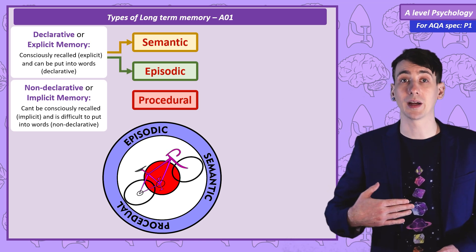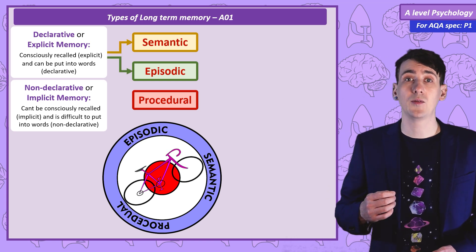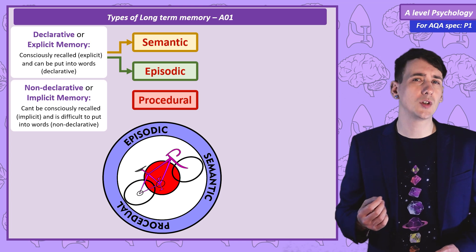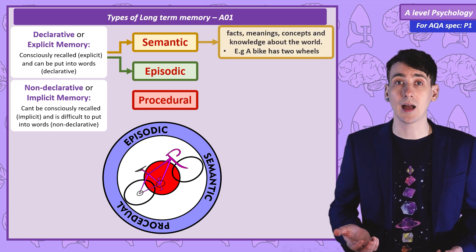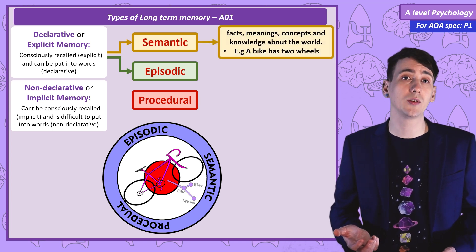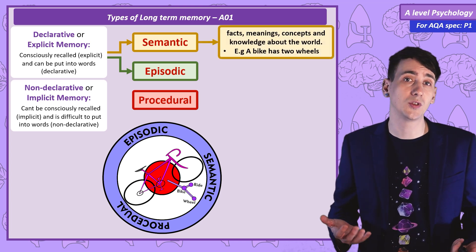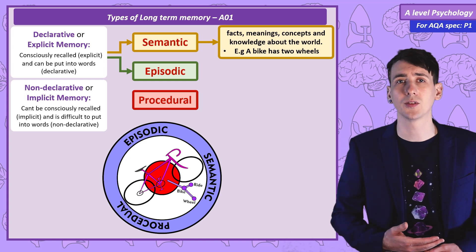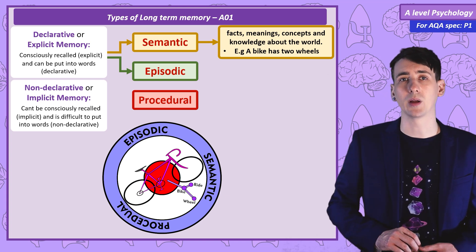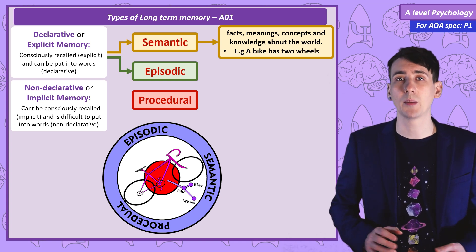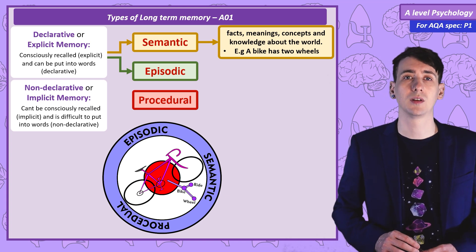So going back to my example: if you asked me, do you know what a bike is? I would say, yeah, it's a two-wheeled vehicle that you sit on and you move by turning the pedals. That's a semantic memory, and I've described it in words.